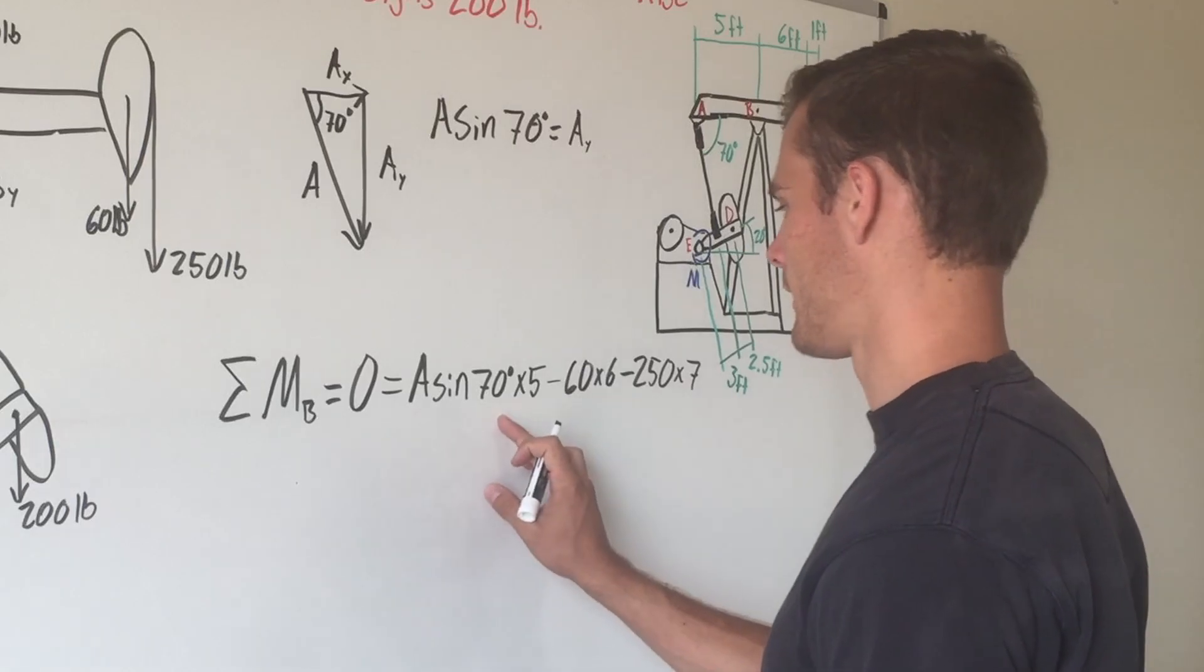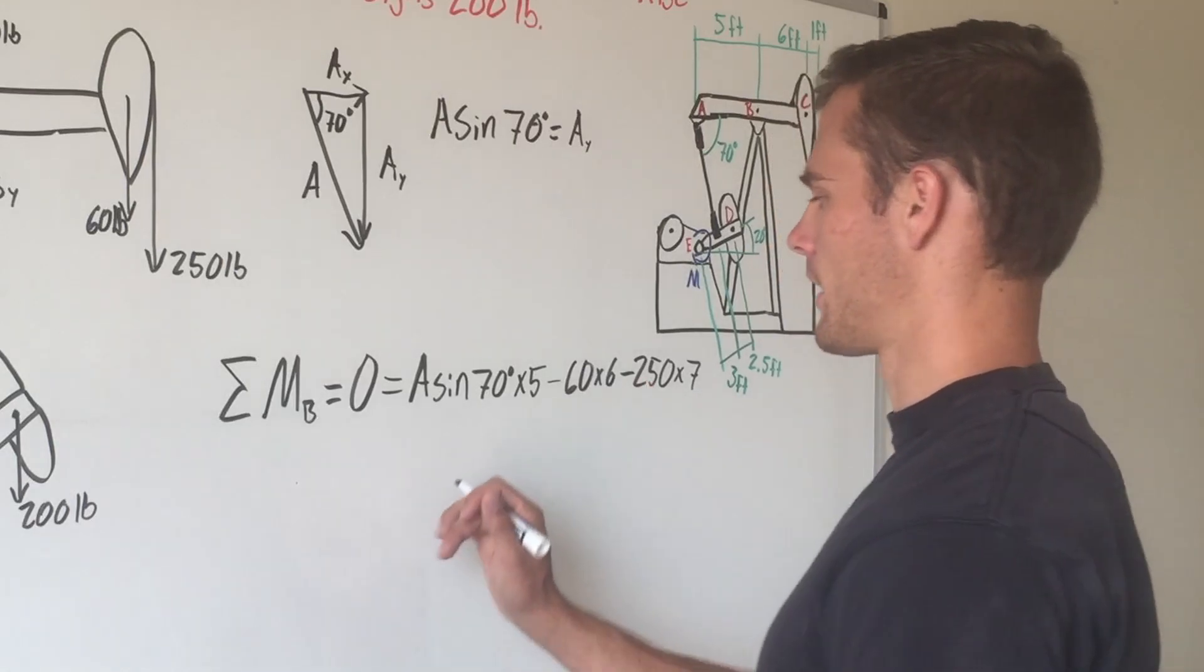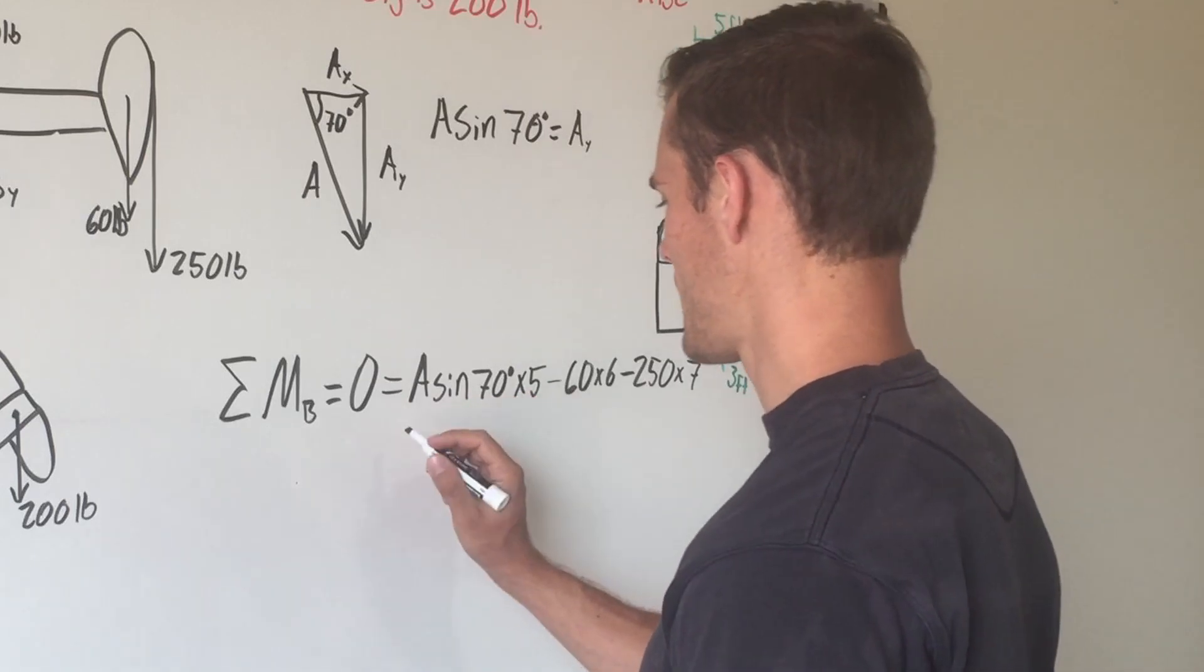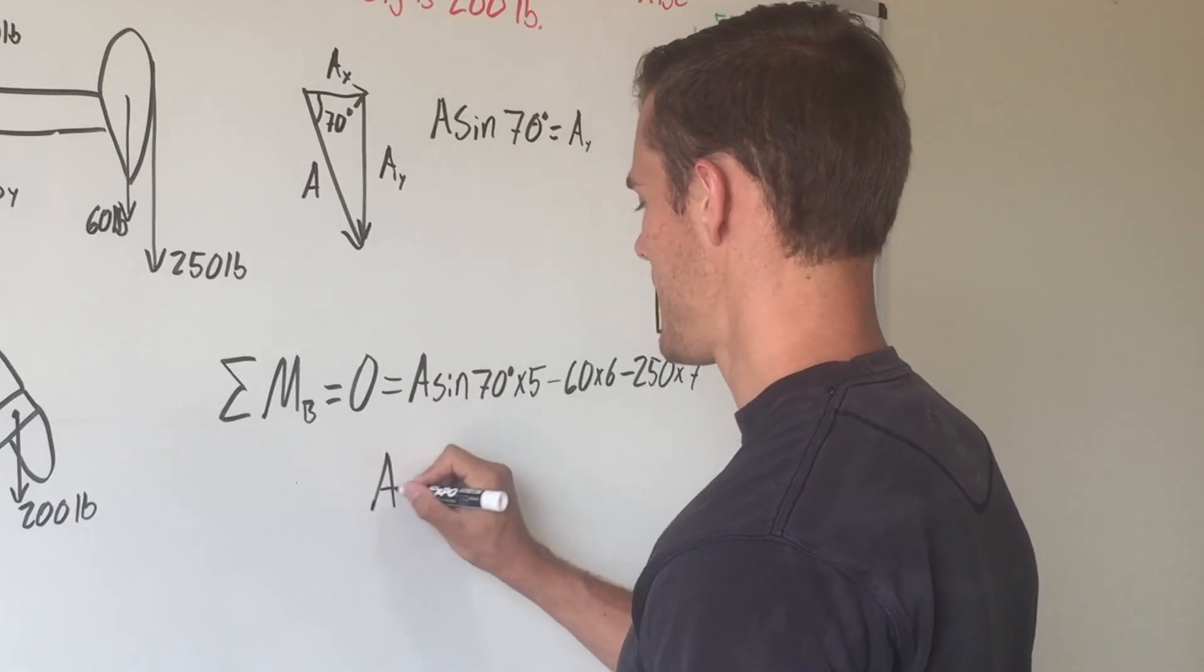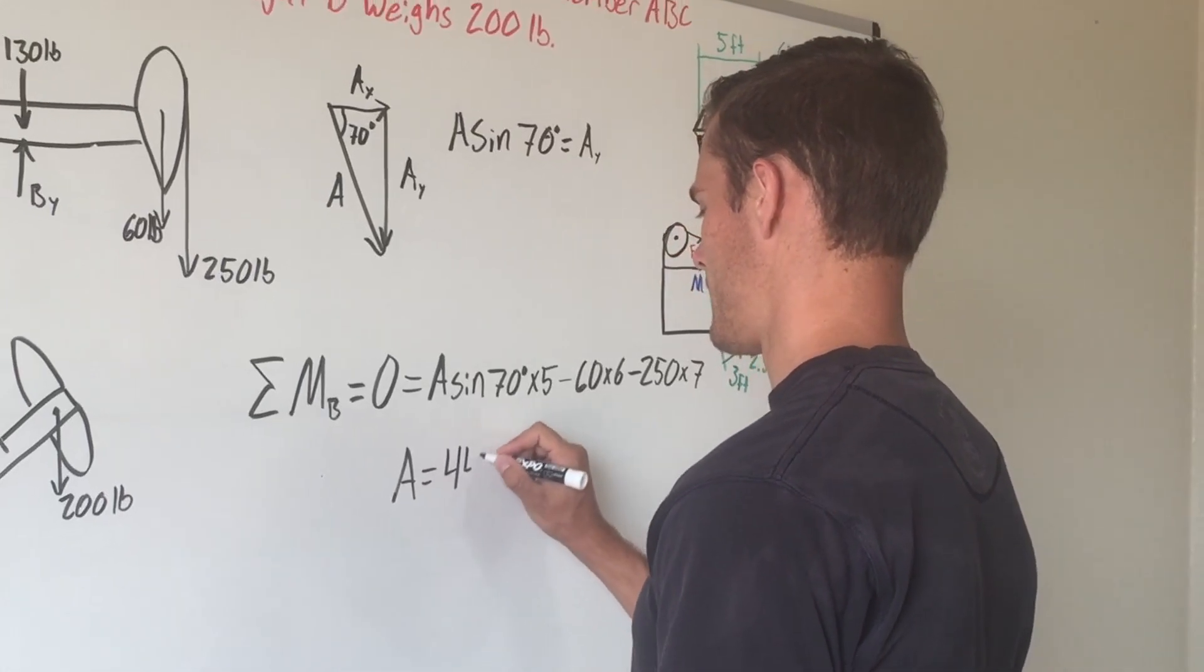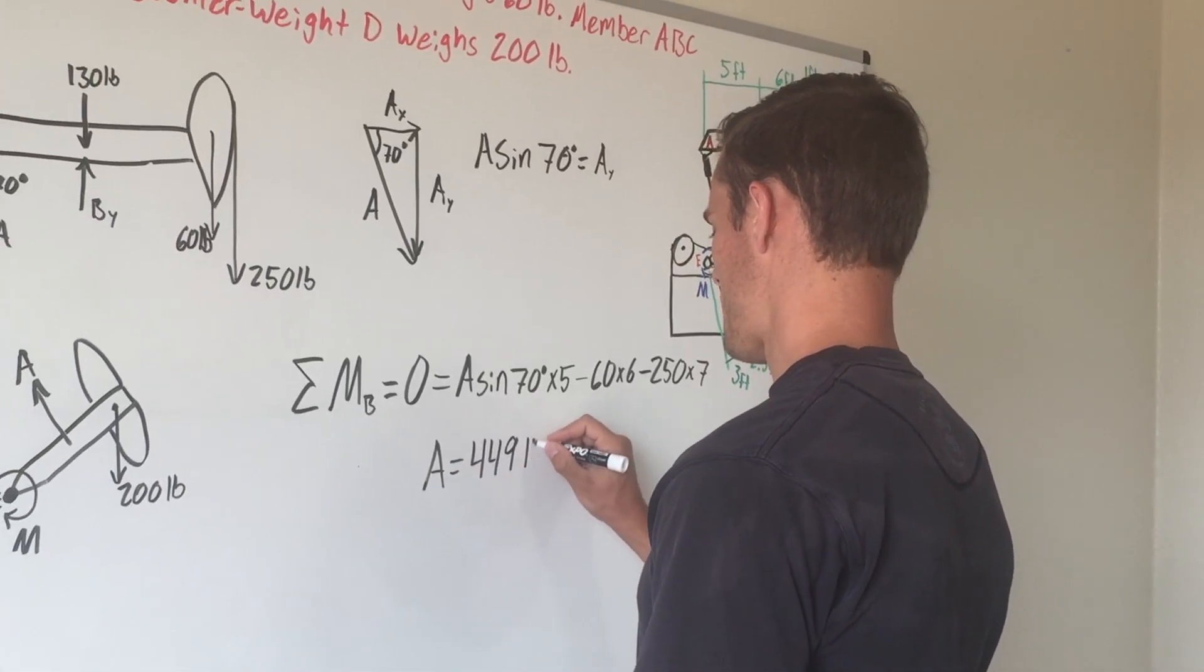Multiply these together, add these over to the other side, combine them, and divide by sine of 70 degrees times 5. You end up getting A equals 449 pounds.